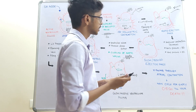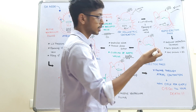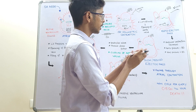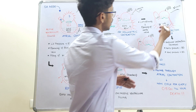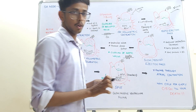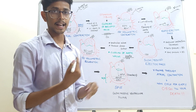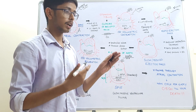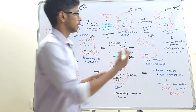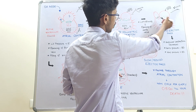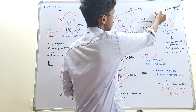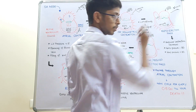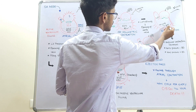When ventricular pressure exceeds 80 mmHg, the blood pushes open the aortic valve, creating communication between the ventricle and aorta. The aorta has elasticity — it can accommodate blood, expand, and maintain pressure. Whatever pressure is in the ventricle is easily transmitted into the aorta, so if ventricular pressure increases to 90, 100, or 110 mmHg, the same pressure is maintained in the aorta as well.